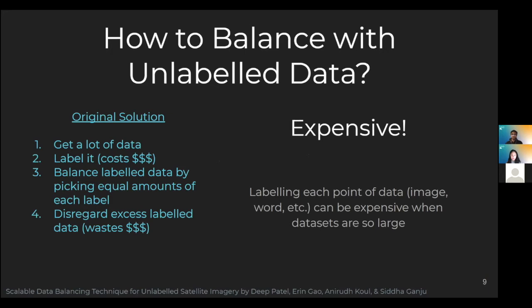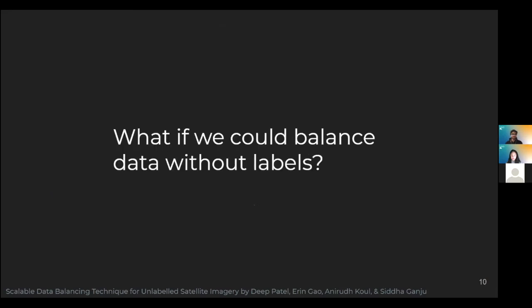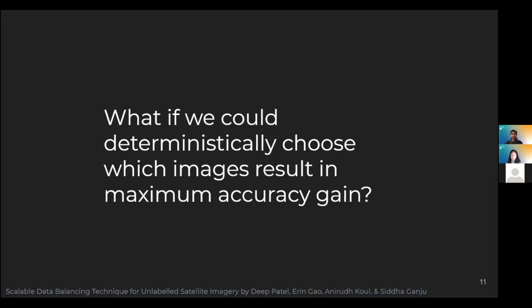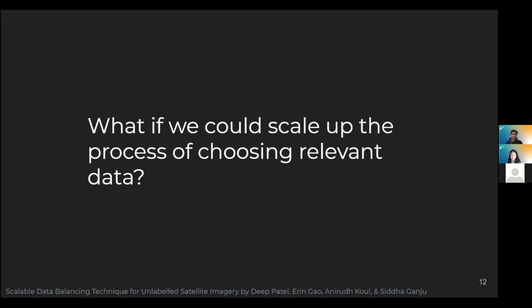We need to get a random bunch of data, label it, balance the labeled data, and then discard the unnecessary labels — that would be a waste of time and resources. But what if we could balance data without depending on labels? What if we could deterministically choose which images result in maximum accuracy gain? What if we could scale up the process of choosing relevant data?